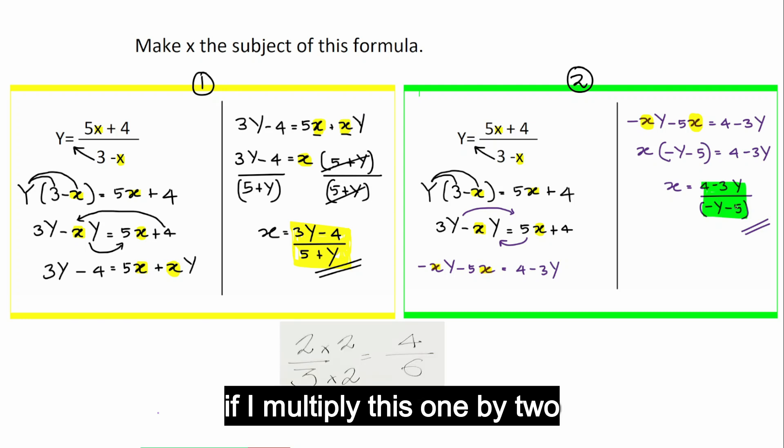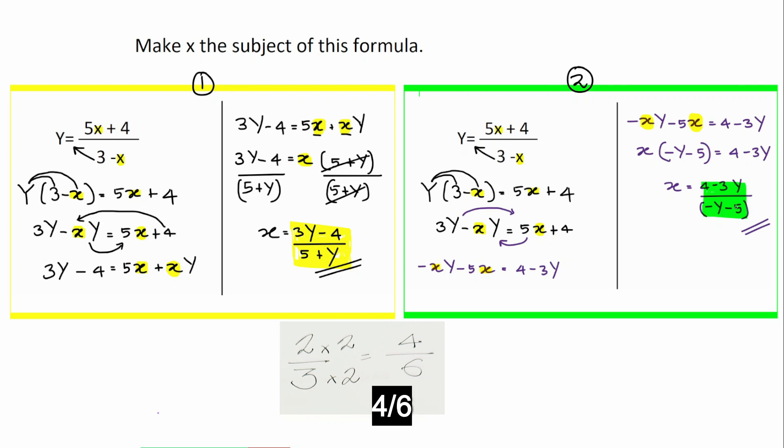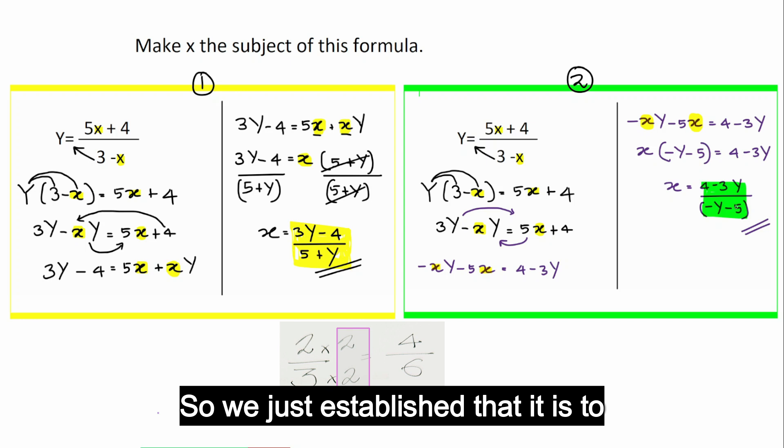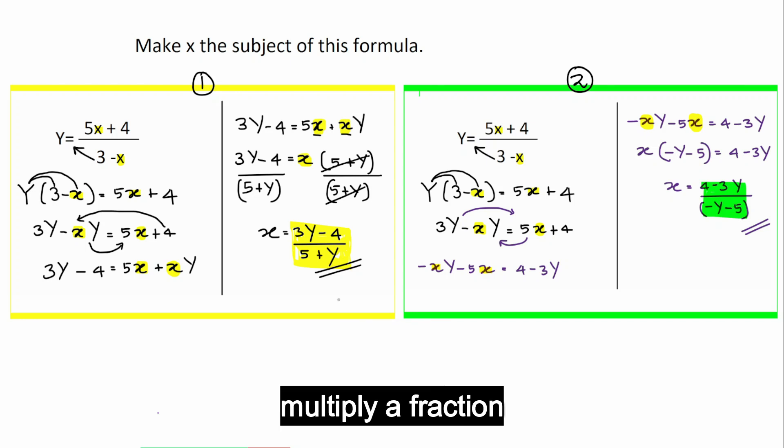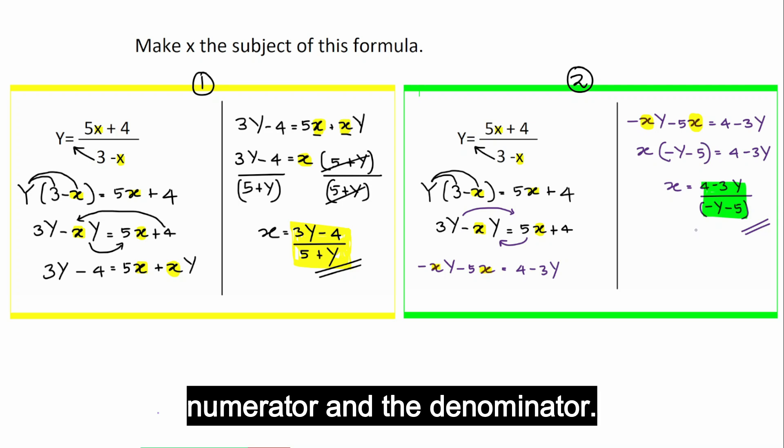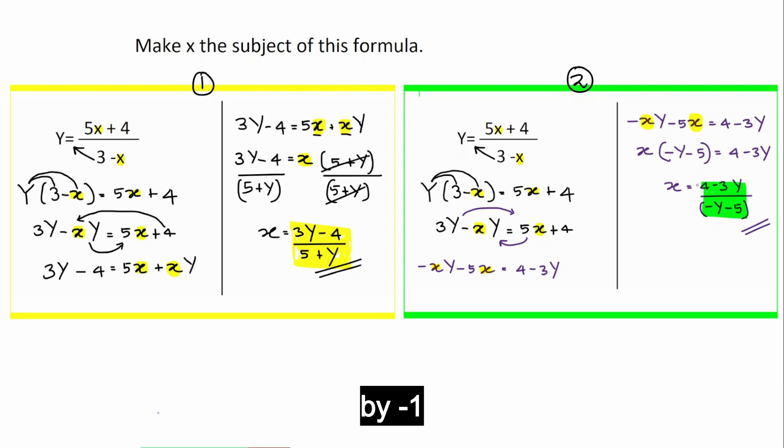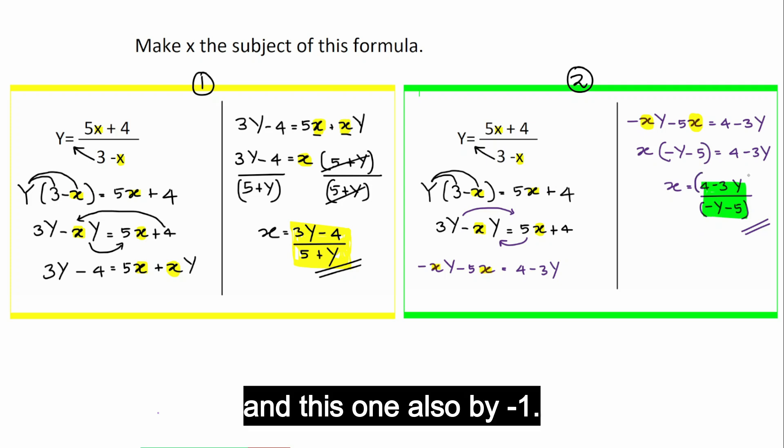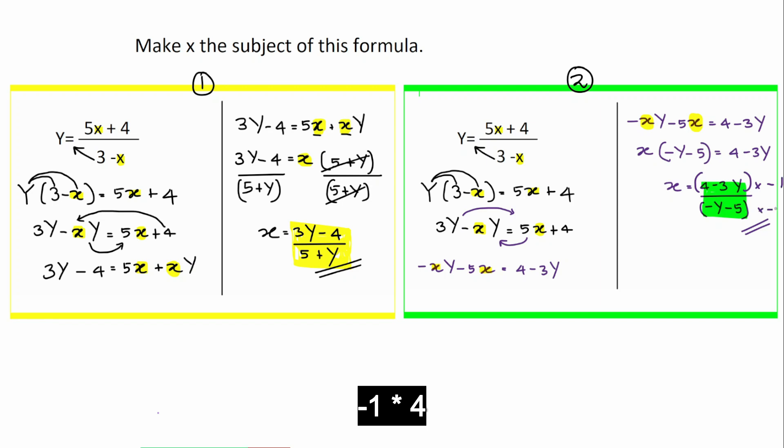For example, if you have 2 thirds, if I multiply this one by 2 and this one by 2, I get 4 sixth. Same thing. We just established that it is okay to multiply a fraction by any number as long as you multiply the numerator and the denominator. Now, I'm going to multiply this one here by negative 1 and this one also by negative 1. Let's see what we get.